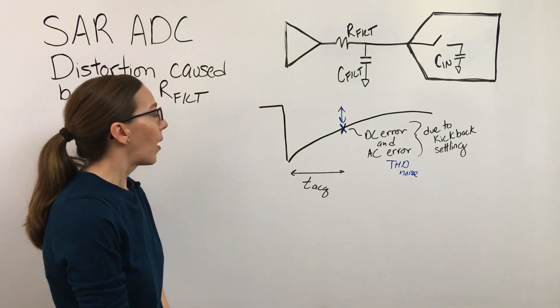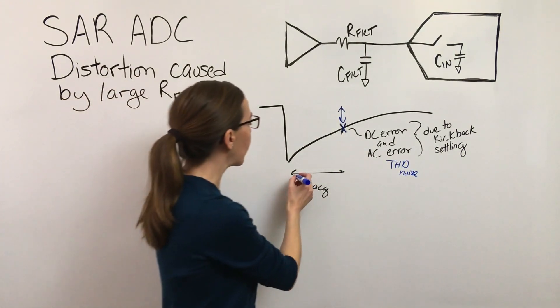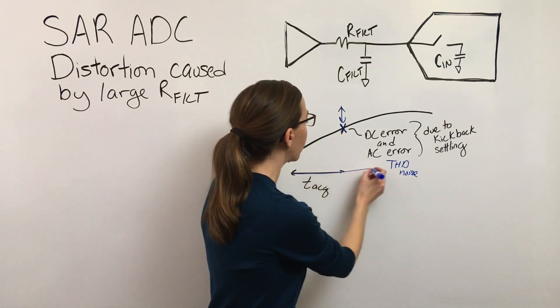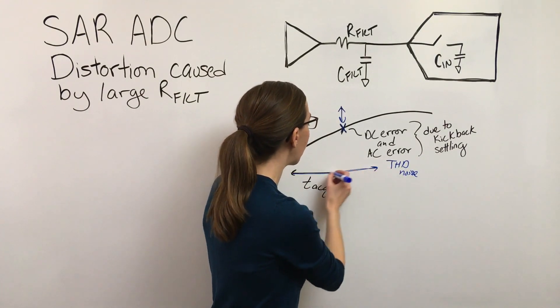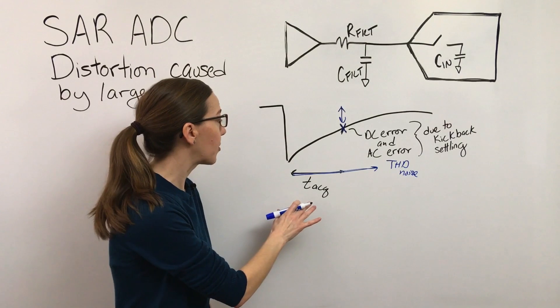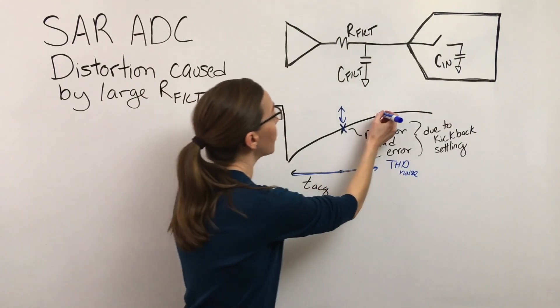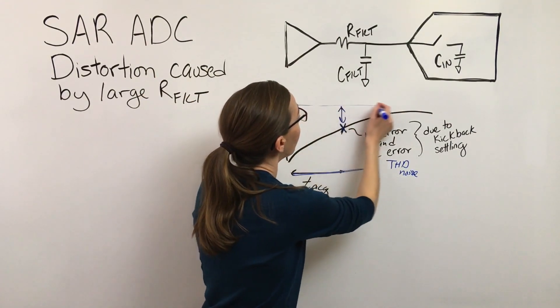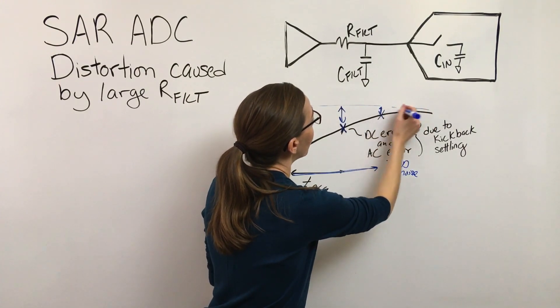This kickback-related error, if you're troubleshooting on the bench, is something that can be resolved or at least improved by slowing your sample rate down and making this acquisition cycle longer.